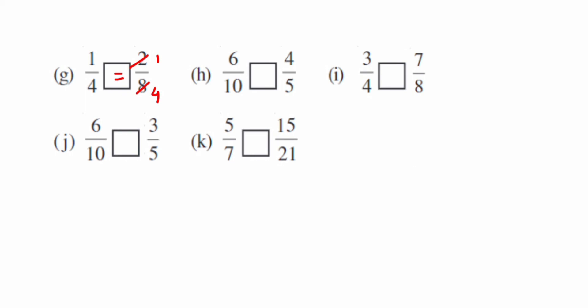The next problem, we can cancel it in two table. 6 by 10: 2 threes are 6 and 2 fives are 10. 4 by 5 I cannot cancel. So if you see, we got 3 by 5, and here we have 4 by 5. 5 is in denominator, so it's a like fraction. In like fractions, compare the numerator. Here 4 is greater than 3, so 4 by 5 will be greater.